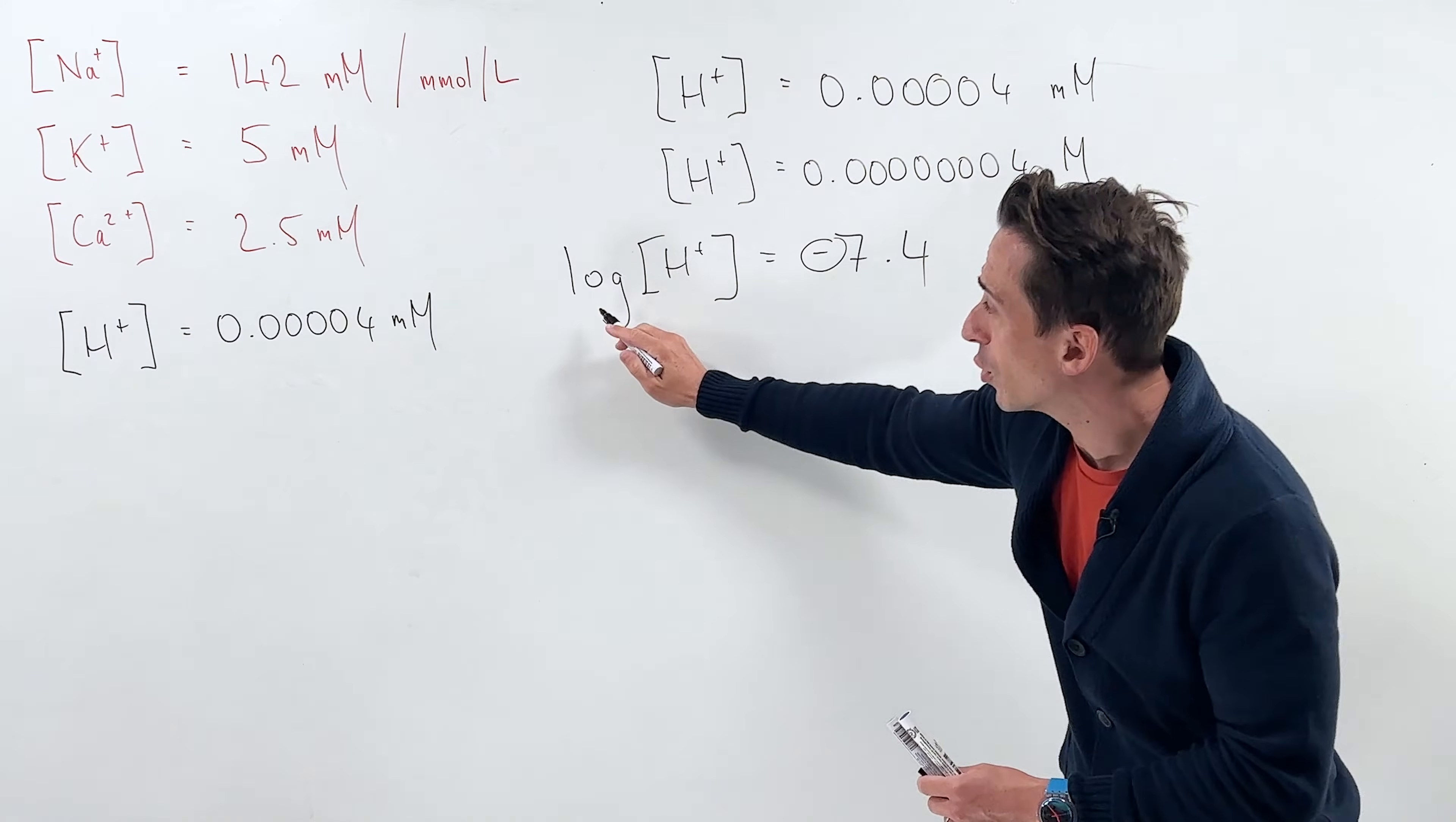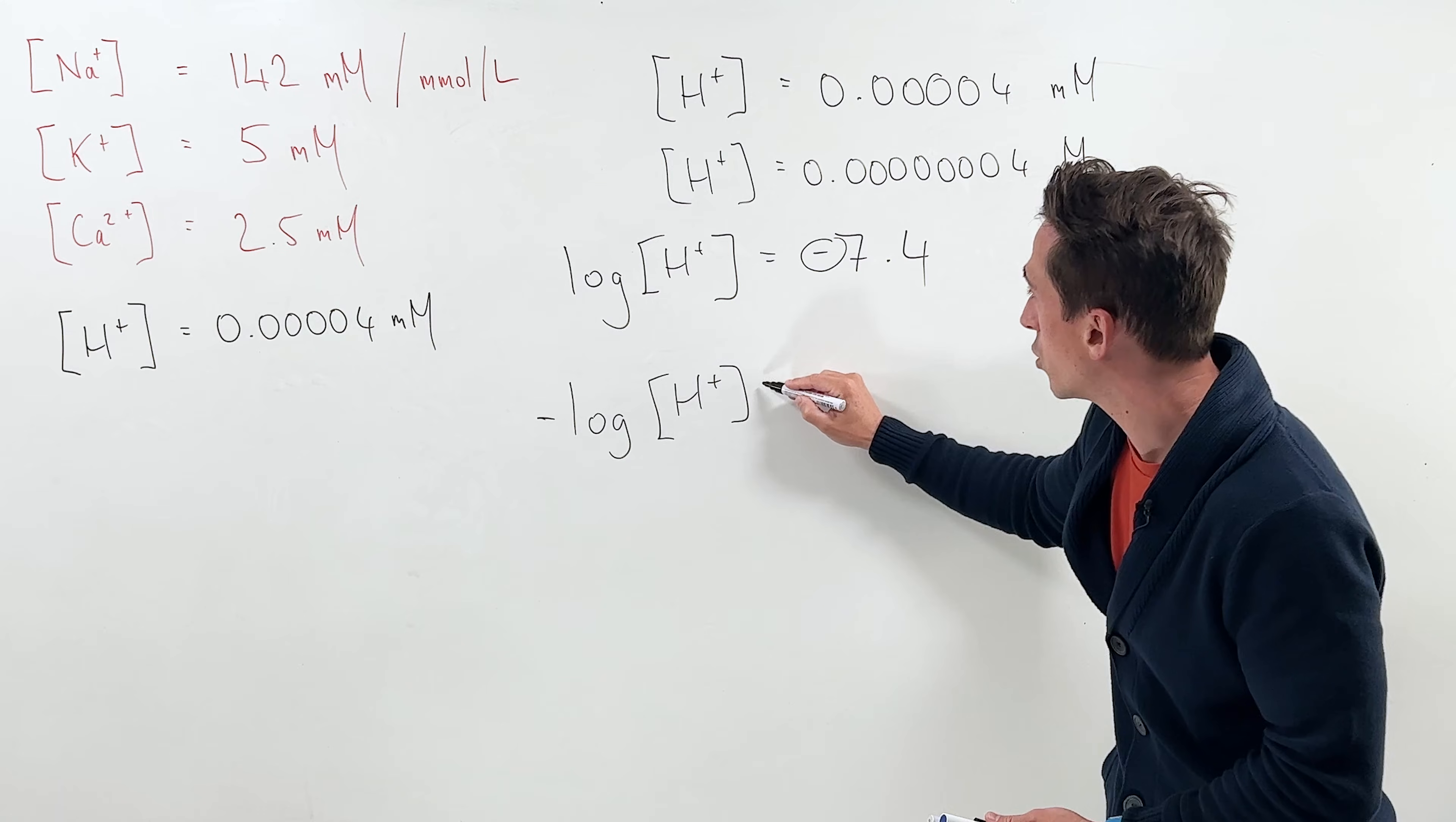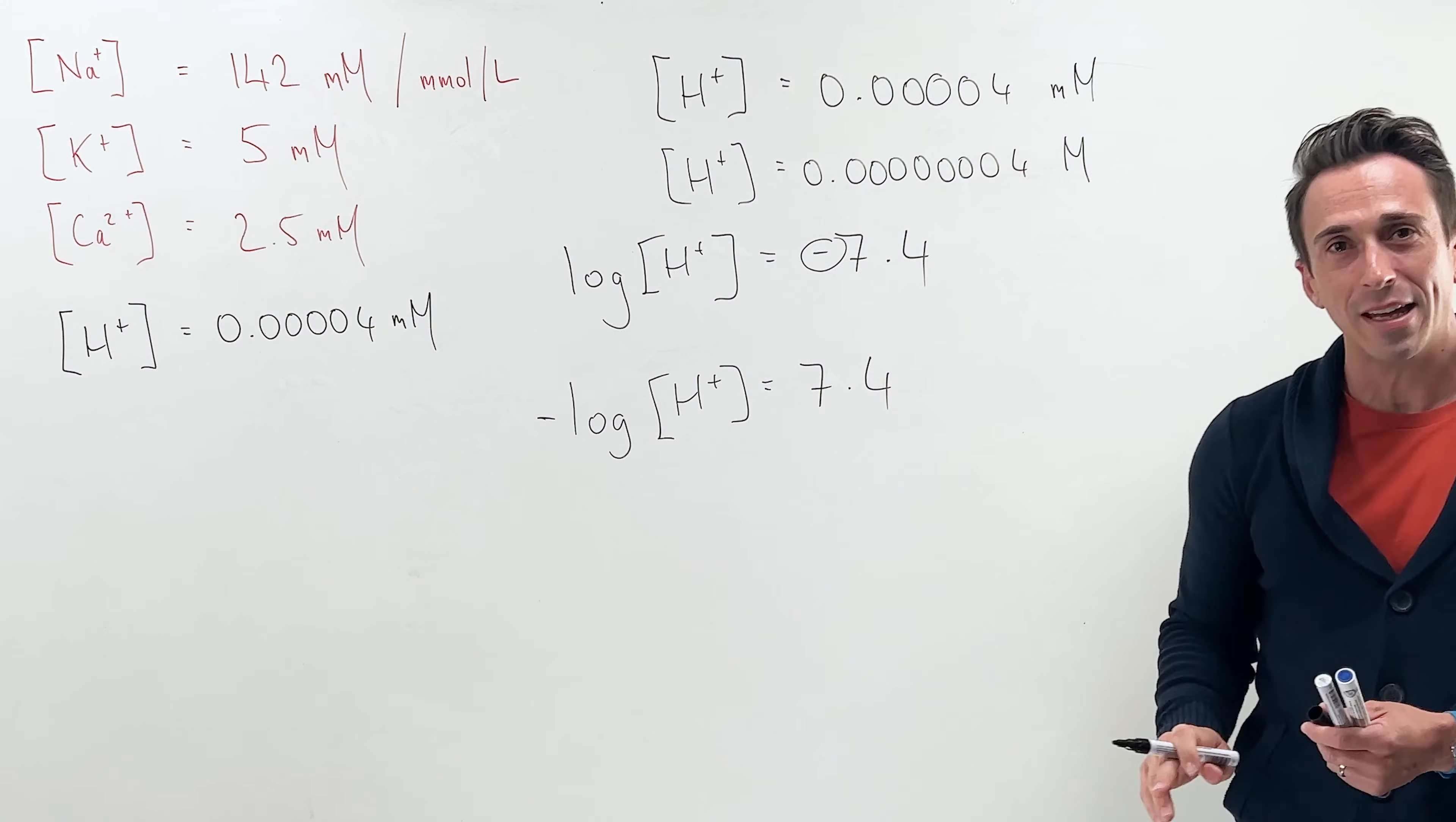So let's get rid of that negative. How do we do that? You can take the negative log. You put the negative on this side. So you go, the negative log of hydrogen ions is 7.4. Now I've gotten rid of that negative.